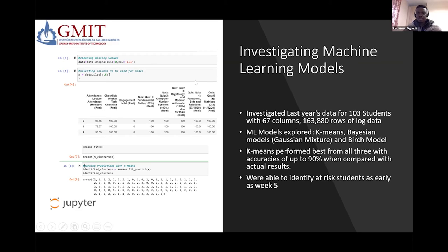We investigated last year's data for 103 students, which contains 67 columns of various modules which the students are engaging with. We also investigated 163,000 rows of log files data. On the left-hand side of the screen, you can see some of the codes we used on Jupyter Notebook. Jupyter Notebook is an interactive tool used for data analysis and scientific computing based on Python. We use Jupyter Notebook to clean the data, put it in the right structure, and run predictions.